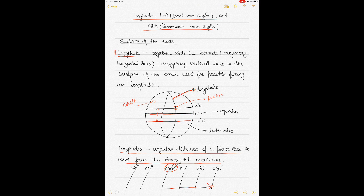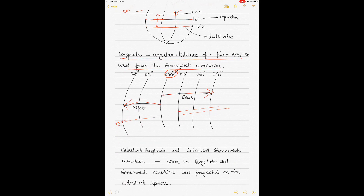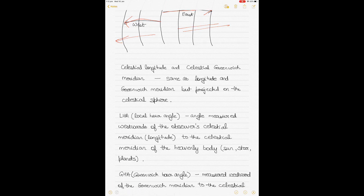When we talk about celestial navigation, we project everything happening on the surface of the earth onto the celestial sphere, which is a sphere of infinite radius surrounding the earth. When we talk about GHA and LHA, we are discussing heavenly bodies and the angles at which they are located. Unlike the surface of the earth where distances are measured in miles, on the celestial sphere we talk in terms of angles because distances are so huge — measured in light years.